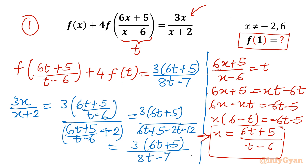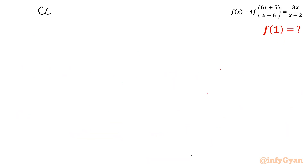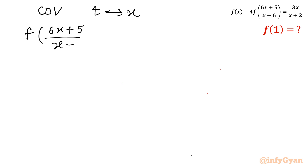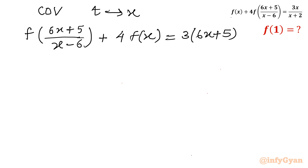Now I will change the variable. We swap t with x. So the equation becomes f((6x+5)/(x-6)) + 4·f(x) = 3(6x+5)/(8x-7). Let us consider this Equation 2.